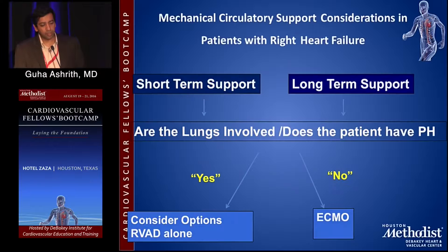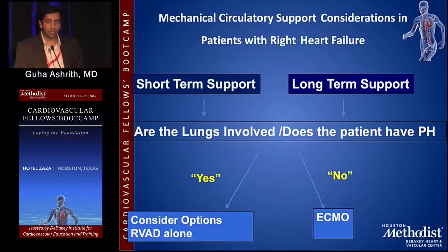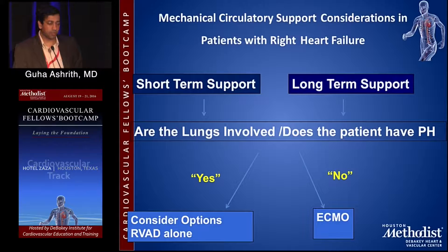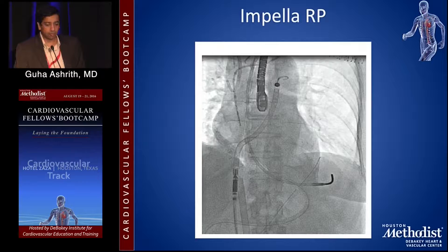Coming to mechanical circulatory support, it's important to know whether the lungs are involved. If PVR is very high, an RVAD will not work because it has to work against a lot of resistance. Most often in patients who've had pulmonary arterial hypertension with high PVR, this is also associated with hypoxia, so in those patients ECMO should be your primary consideration.